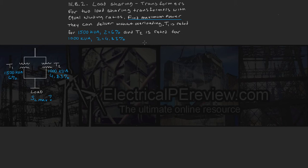For this example, we're taking the same transformers as last time with the same ratings. T1 is rated for 1500 kVA and 6% impedance, T2 is rated for 1000 kVA and 4.83% impedance, and we're looking for maximum load.